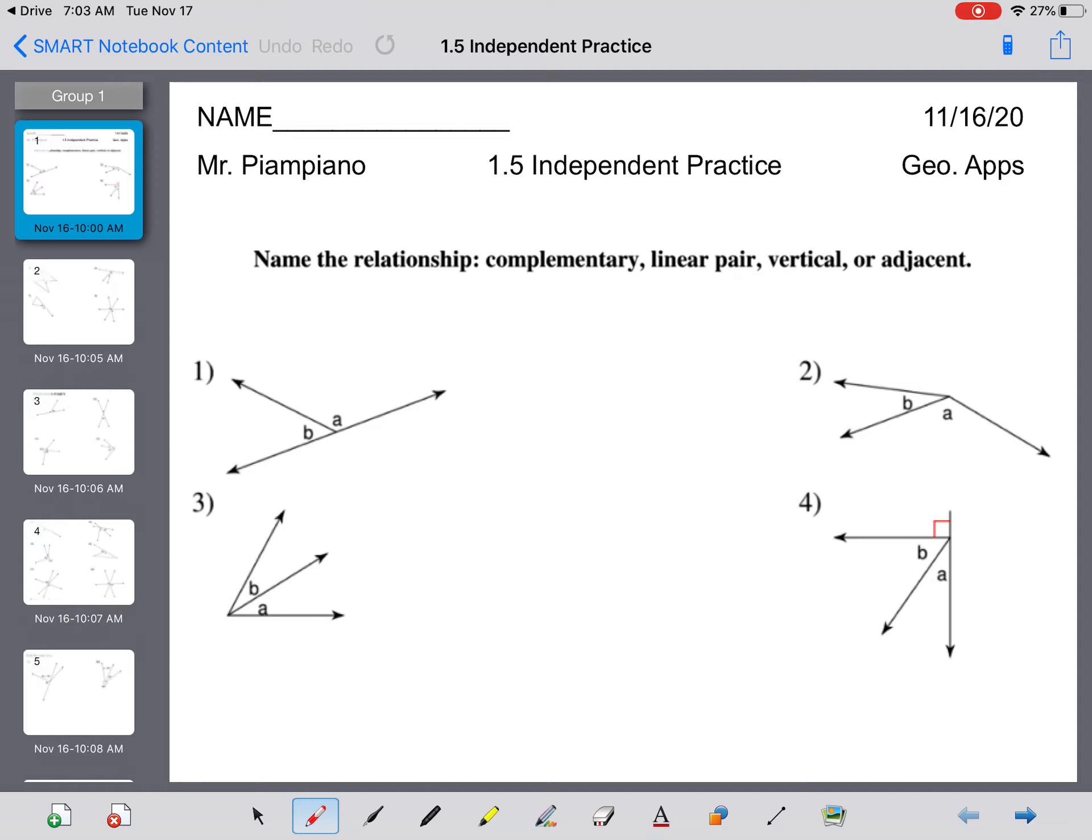All they ask you to do here is name the relationship: complementary, linear pair, vertical, or adjacent. Remember complementary is 90 degrees or a right angle. Linear pair is a straight line or 180 degrees. Vertical is our bow tie. And adjacent means that they share a vertex and a ray.